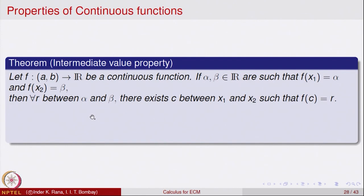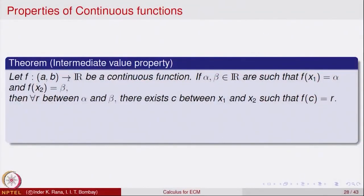This is the intermediate value property — it says that any value in between alpha and beta should be taken at least once by the function. This is a property of continuous functions. Geometrically, it means there is no break in the graph of the function. Once you start plotting the graph from point (a, f(a)) to (b, f(b)), you should not lift your pen. Mathematically, this theorem means that images of intervals are intervals.